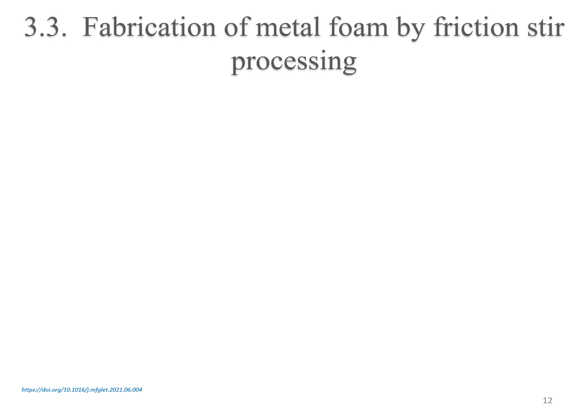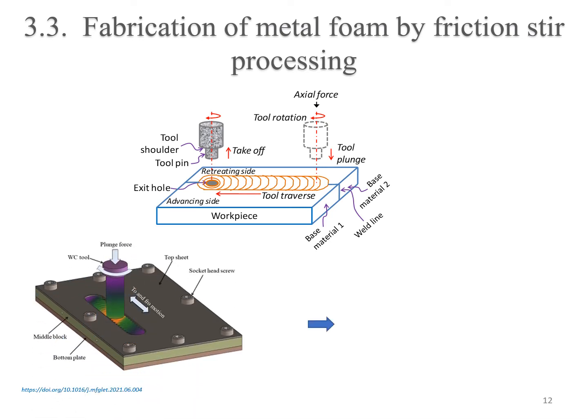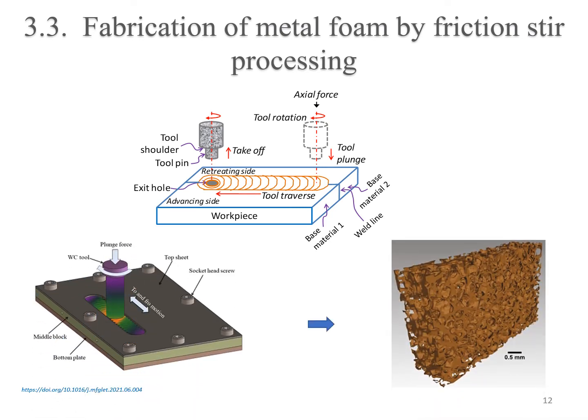Recently, fabrication of metal foam was reported using friction stir processing. This technique was used to fabricate solid-centered open cell copper foam parts of different shapes and sizes. Sintering and dissolution with NaCl spaces were used to obtain the foam parts, and the pressure and temperature needed were obtained by plunging a rotating tool into a top sheet in the setup.